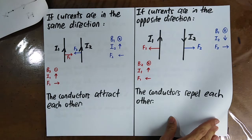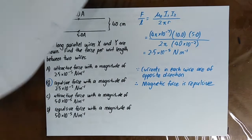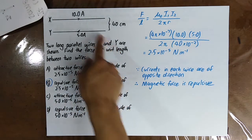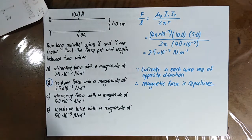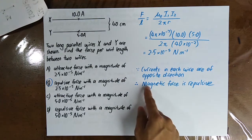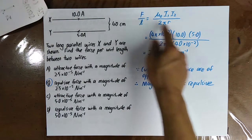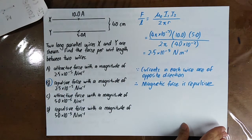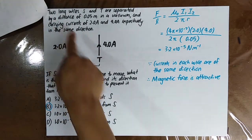Now let's do some questions. Two long parallel wires X and Y — find the force per unit length between them. Since the currents are in opposite directions, the magnetic force is repulsive. Using the formula F/L = μ₀I₁I₂ / (2πR), you can calculate the force per unit length.